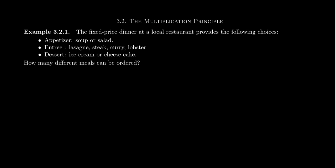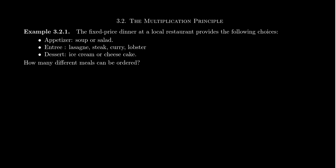Before we see what the multiplication principle is, let's look at an example. Imagine you're going to eat dinner at a local restaurant attractive to college students because every meal on the menu is the exact same price — a student fixed-price meal. You get an appetizer, a single entree, and a single dessert. The question is: with these three choices that have to be made — appetizer, entree, dessert — how many different meals could be ordered using the fixed-price dinner at this restaurant?